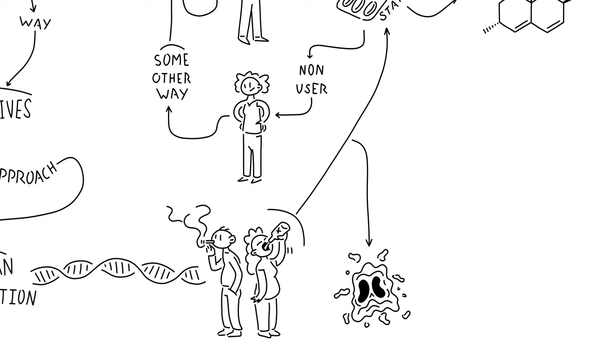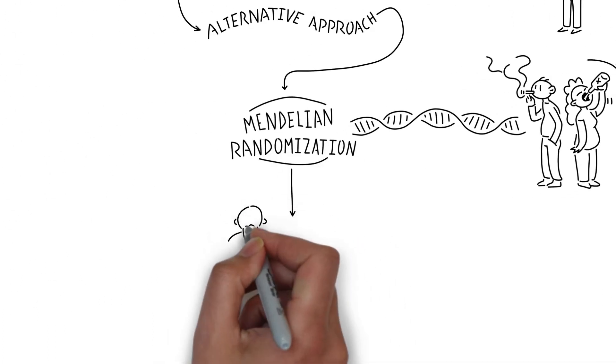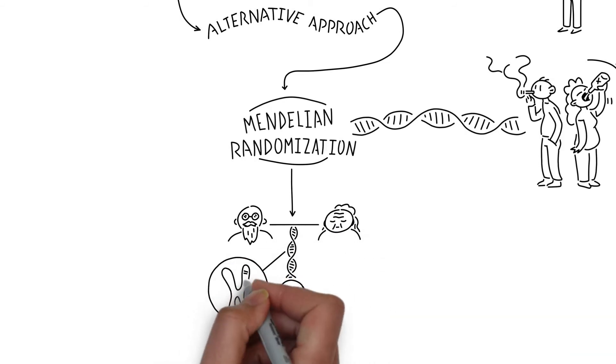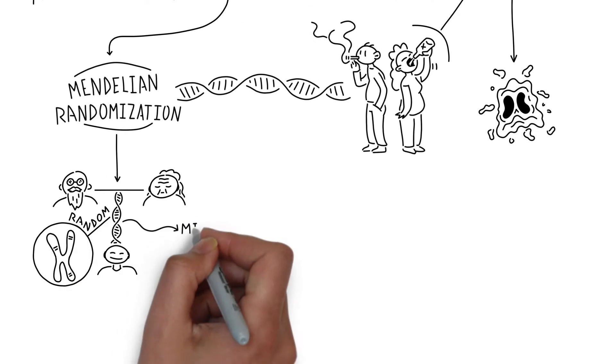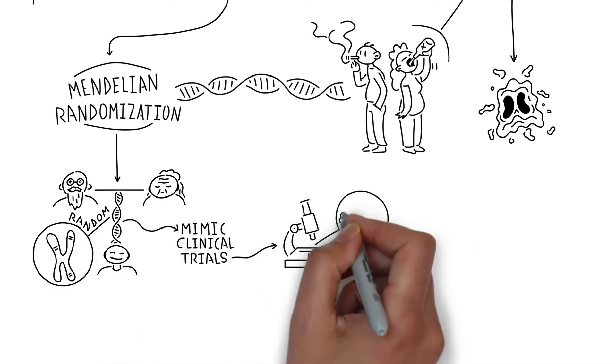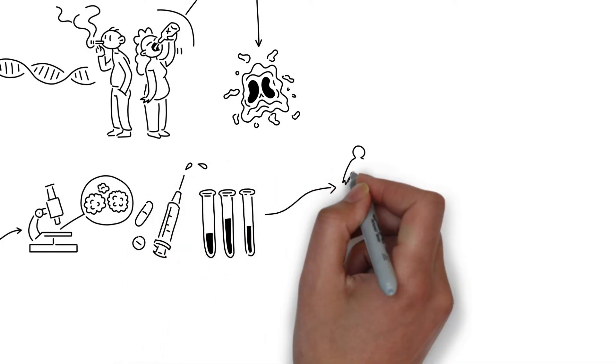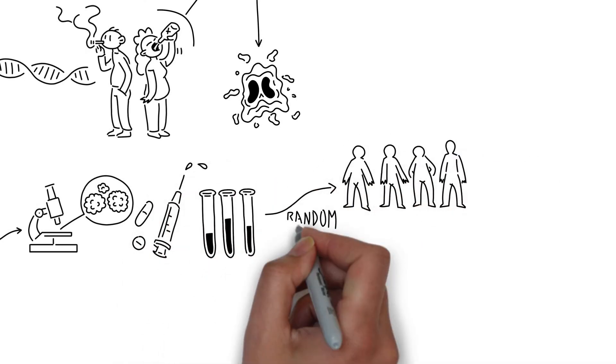You can think of Mendelian randomisation as a natural experiment because the random processes by which we inherit genetic variants from our parents mimic the way in which researchers conduct clinical trials that test possible treatments in which participants are randomly assigned to different groups.